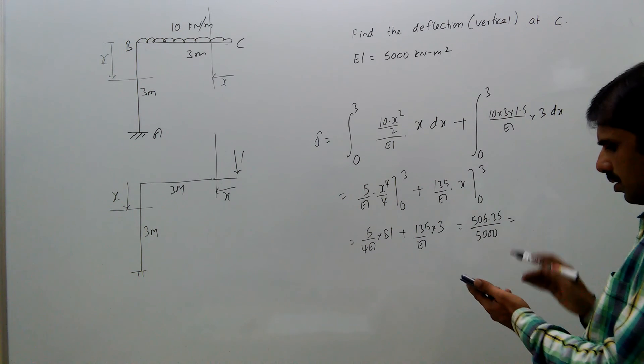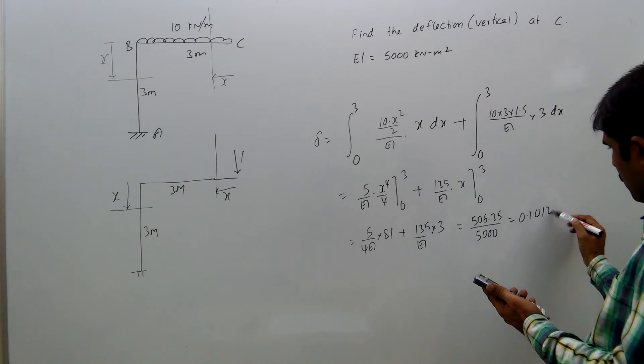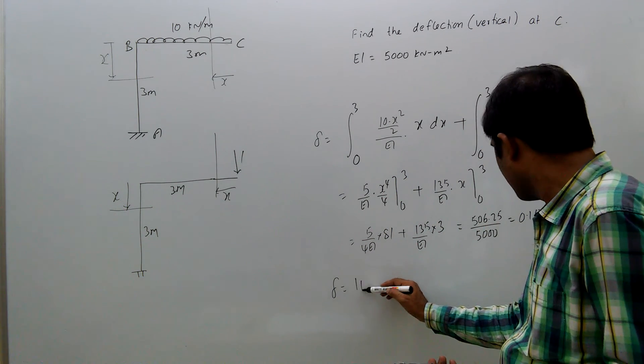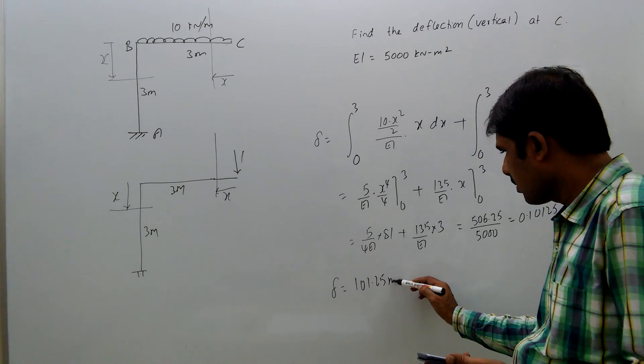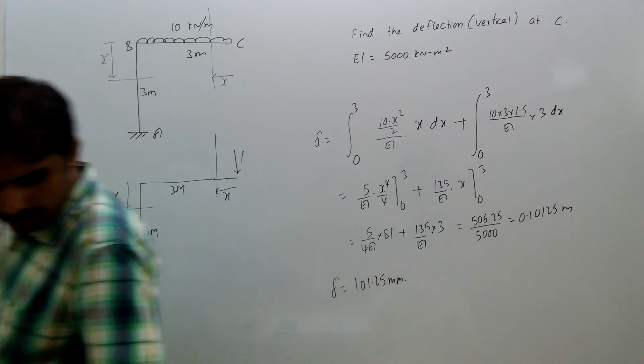5000. That's 0.101 meters, or delta equal to 0.1 to 1.25 millimeters, or delta equal to 0.1 millimeters.